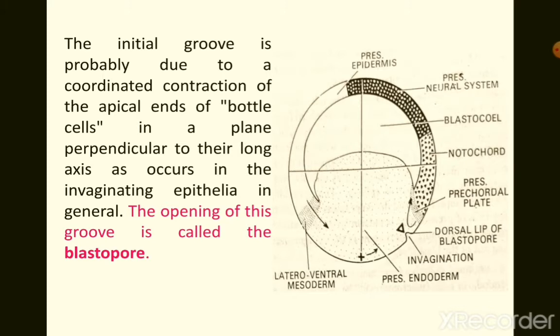Once the initial groove is formed, it is likely due to a coordinated contraction of the apical ends of bottle cells in a plane perpendicular to their long axis, as occurs in invagination-related epithelia in general. The opening of this groove is called the blastopore.